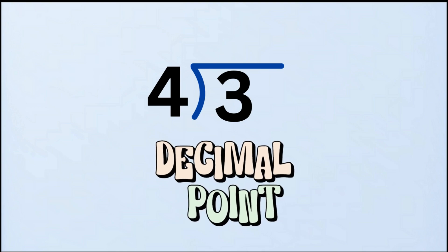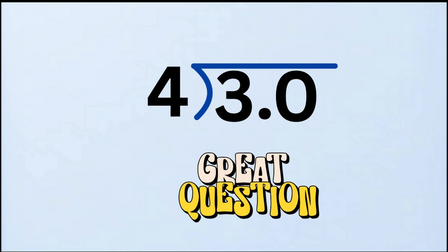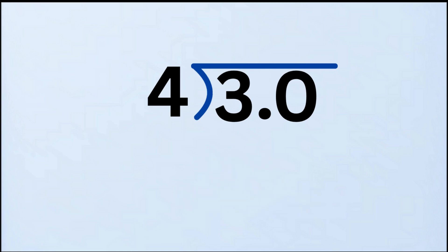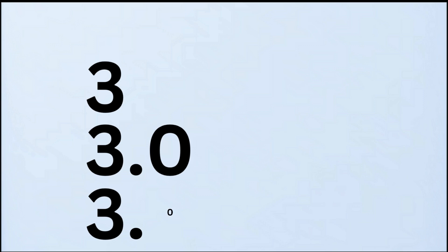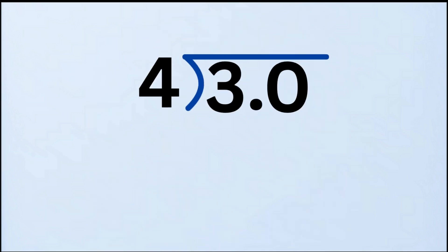We place a decimal point after the three, and don't forget to put a zero right after it. Why are we allowed to do that? Great question! Adding a decimal and a zero does not change the value of the number. Three is the same as 3.0, or even 3.00 — they all mean the same thing. We just add the point zero so we can keep dividing past the decimal point.